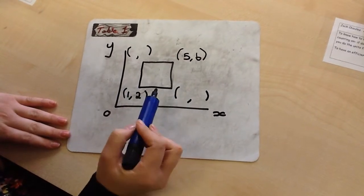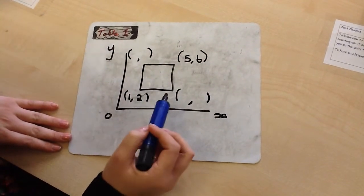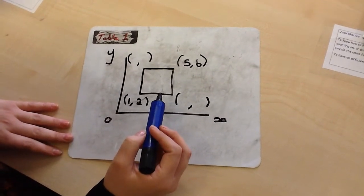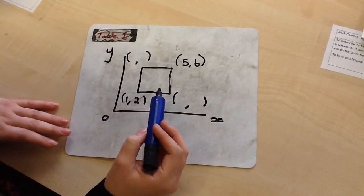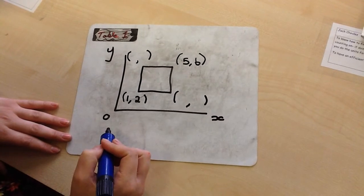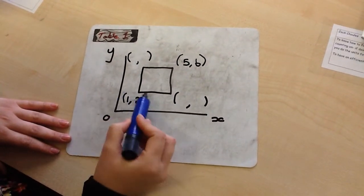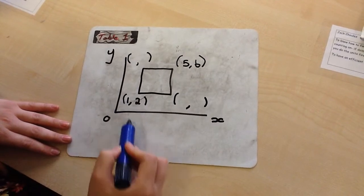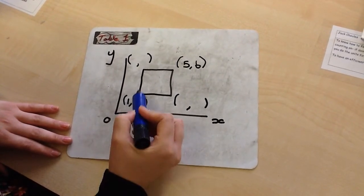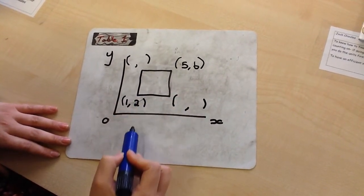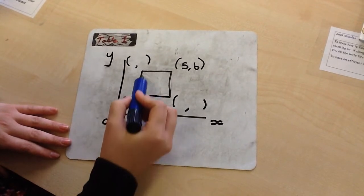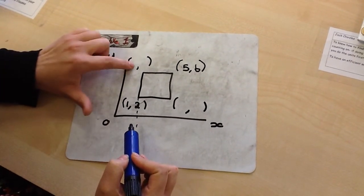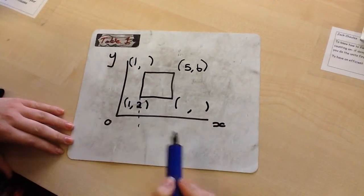On this grid I have the shape of a square, and what I know about a square is that all the sides are the same length, which is a good bit of information to have. I've got the coordinate 1 for my x-axis, and this whole side is on my x-axis at the same level as that coordinate, so I know that my x-axis here is going to be 1.